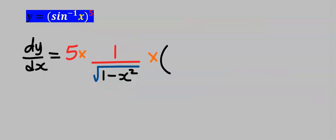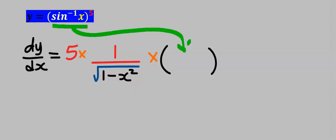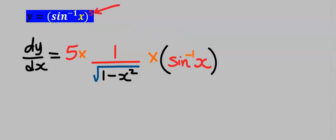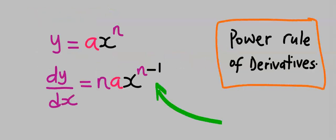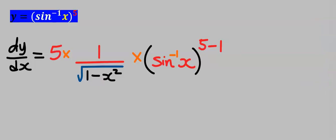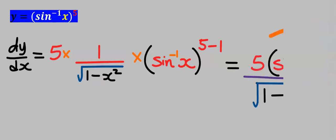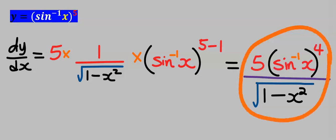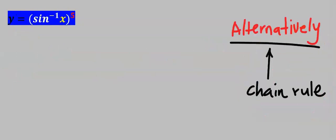Next we open a bracket and bring back the sine inverse of x, according to chain rule. The 5 at the top will minus 1 according to the power rule of derivatives. Next simplify the result and this becomes our dy/dx. Alternatively, using chain rule substitution: